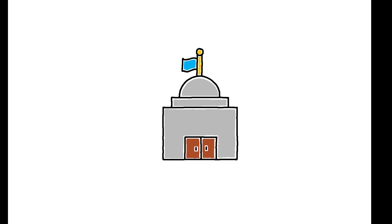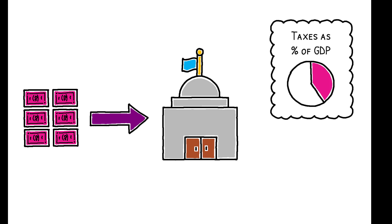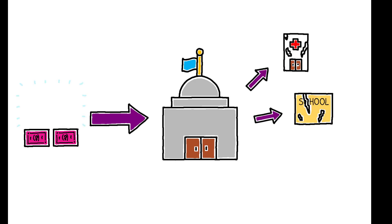In many of the world's poorest countries, tax revenues are extremely low. Rich countries collect 40% of GDP in taxes, but the equivalent number here is only 10%. This constrains economic development as a lack of government revenue can lead to lower-quality public services and inhibit growth.